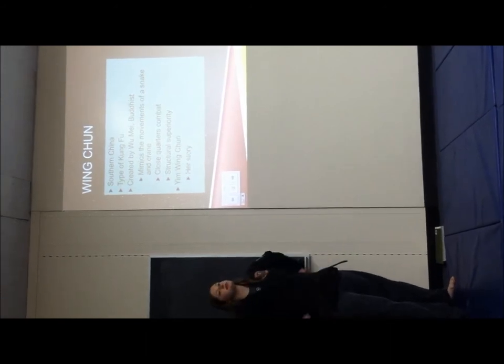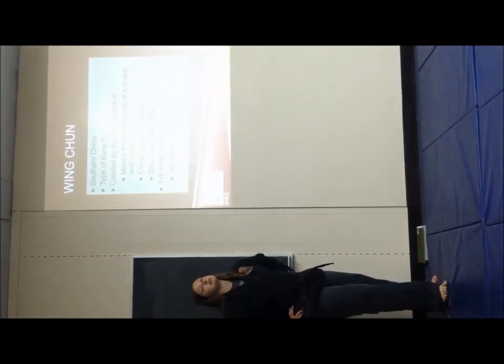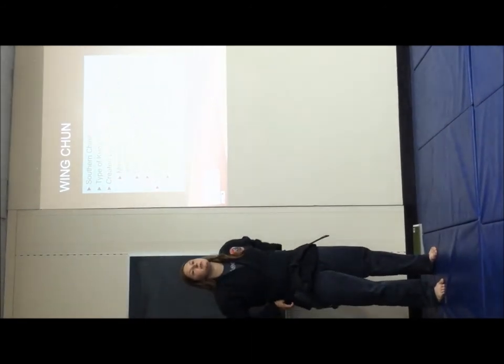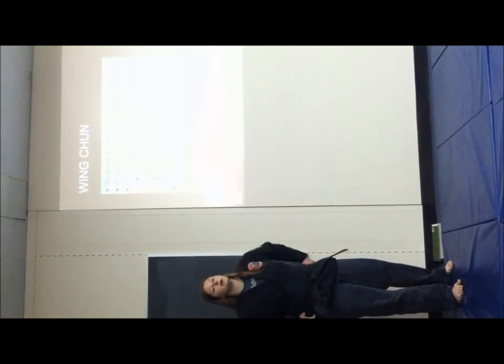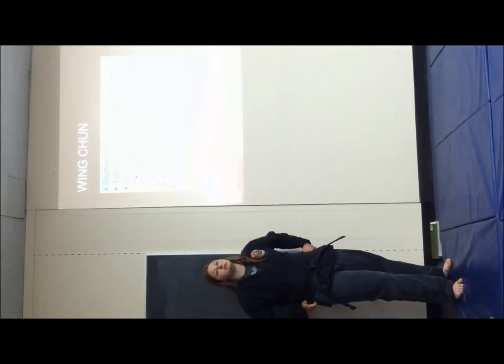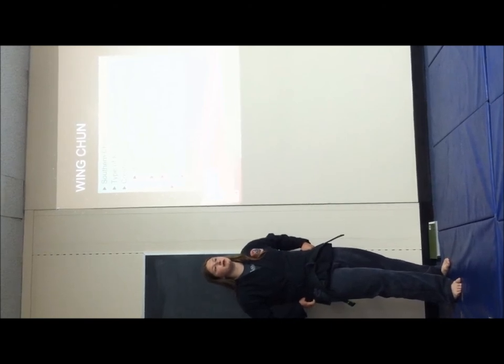His first prodigy and student was named Yim Wing Chun. Yes, that's where the name comes from. And her story is that she was being bullied into marriage by a wealthy landowner in China. And so what happened was she said, give me six months to train and if you can beat me in a fight, I'll marry you.